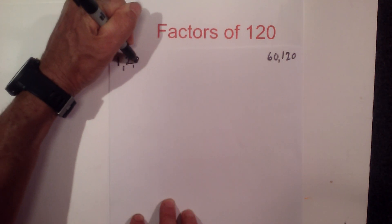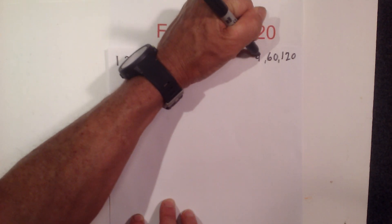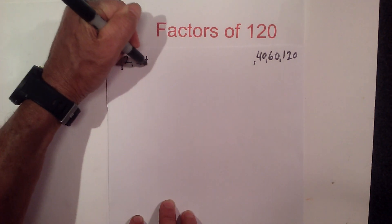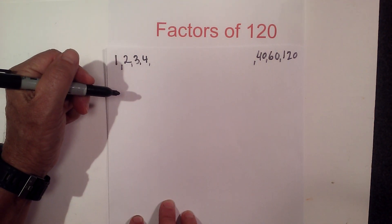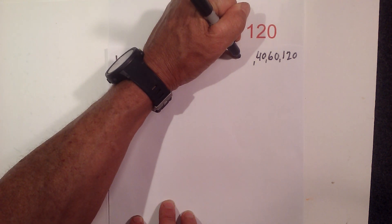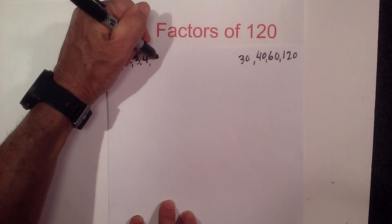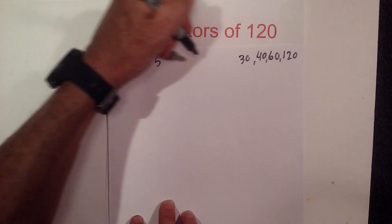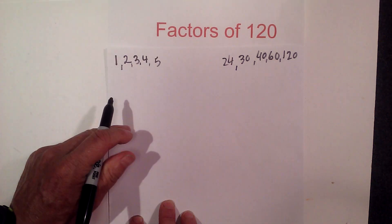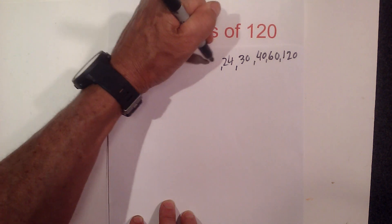I know 3 will go into 120, and that is 40. Then 4 goes into 120, 30 times. Then 5 goes into 120 and it goes into it 24 times. Then 6 goes into 120.